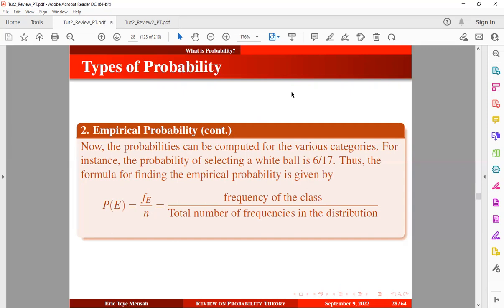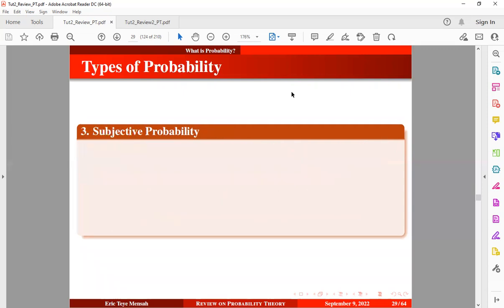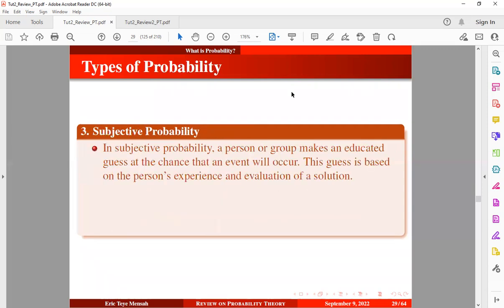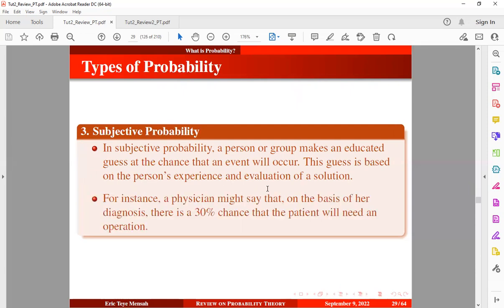Now, let's take a look at the last type of probability known as subjective probability. In subjective probability, a person or group makes an educated guess at the chance that an event will occur. This guess is based on the person's experience and evaluation of a solution to a problem. For example, a physician might say that on the basis of a diagnosis, there is a 30% chance that the patient will need an operation.